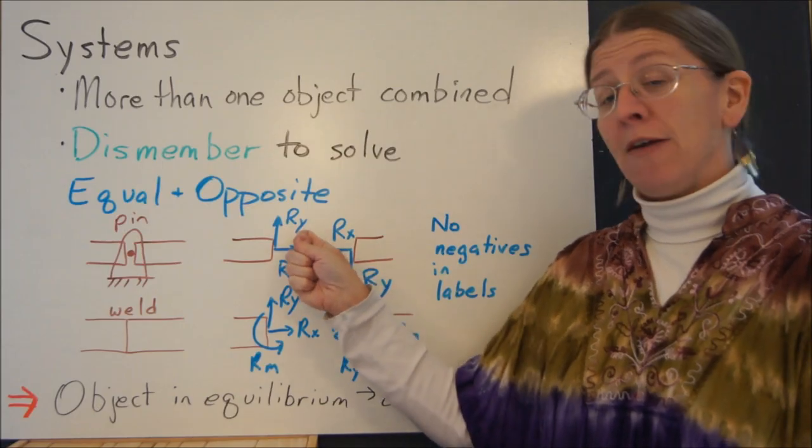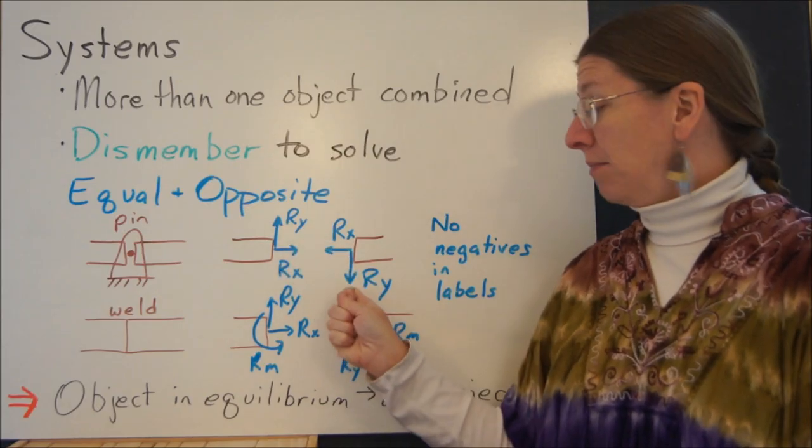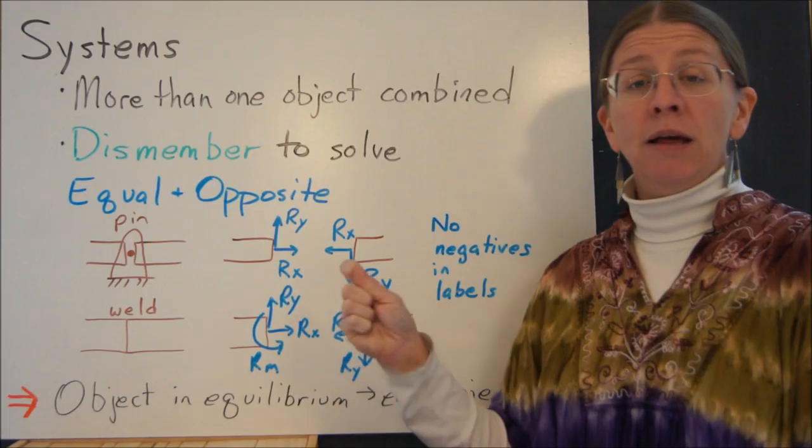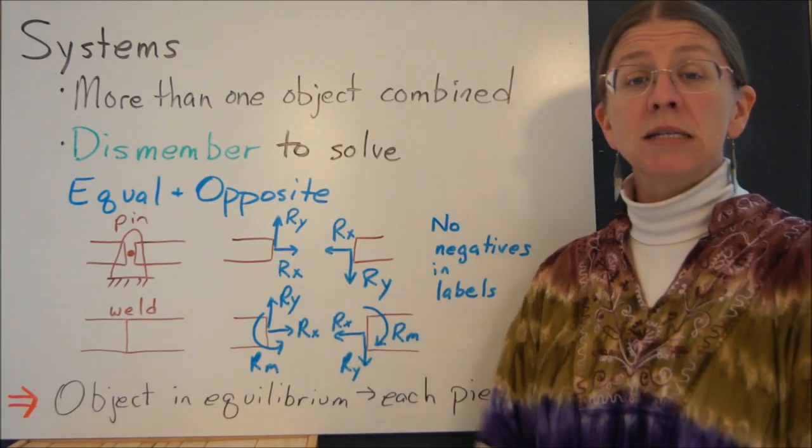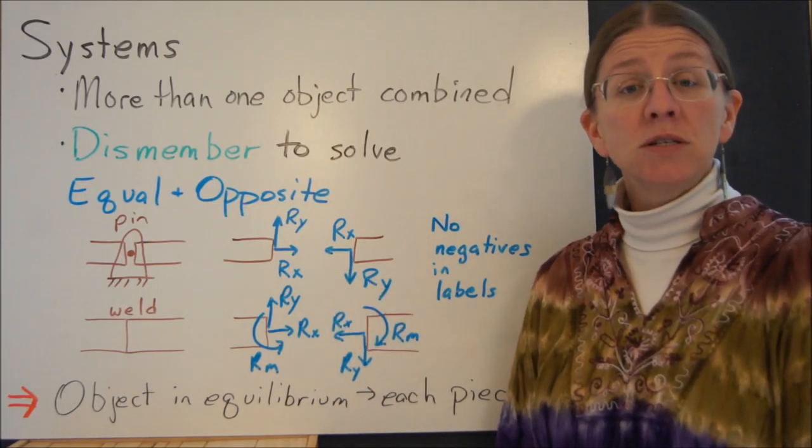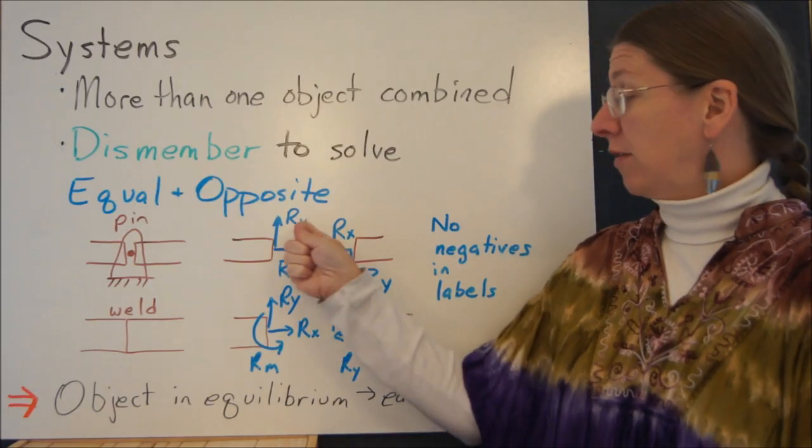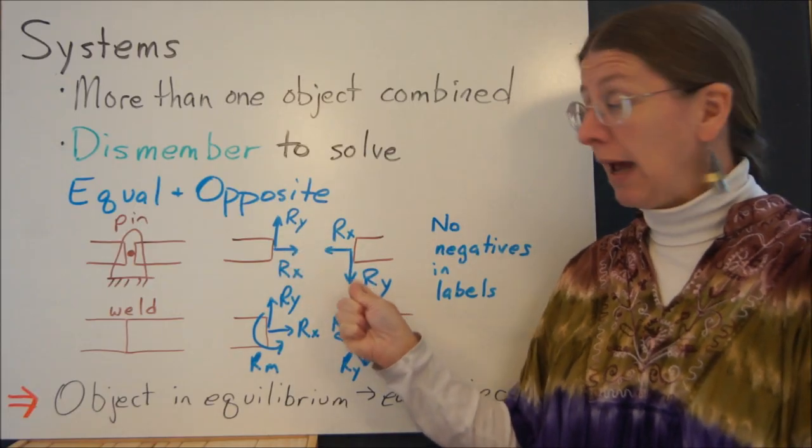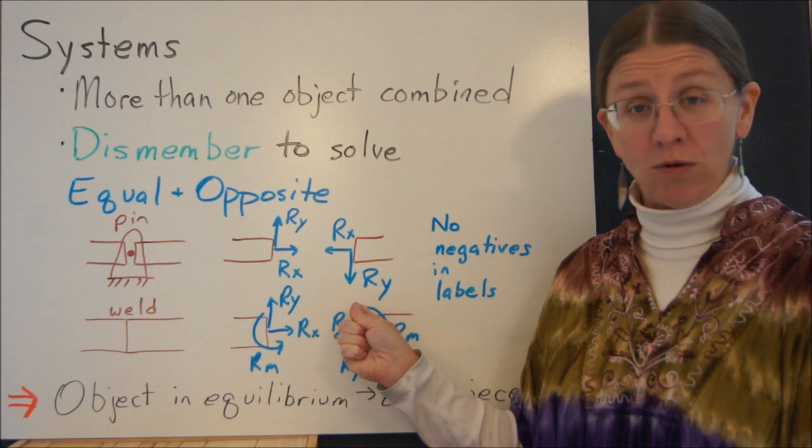So in a typeset book, in something where it's printed, you might actually see a vector notation here and the minus vector notation here. What I would like you to do is continue labeling everything with the magnitudes of the forces like we've been doing. So this is ry and this is ry. And the opposite comes in the direction of the arrows.